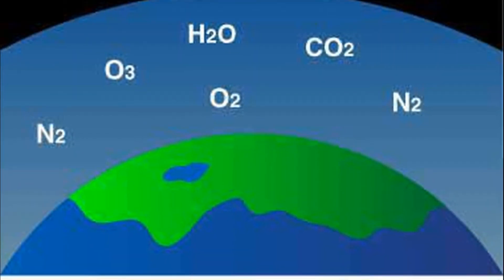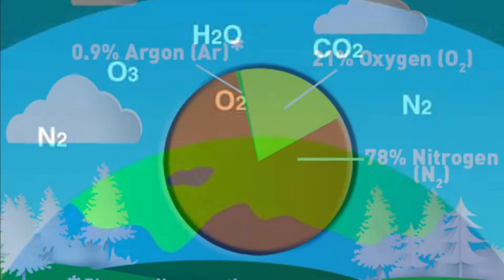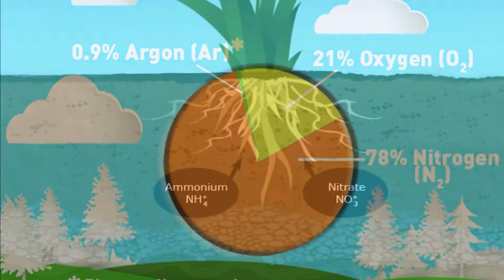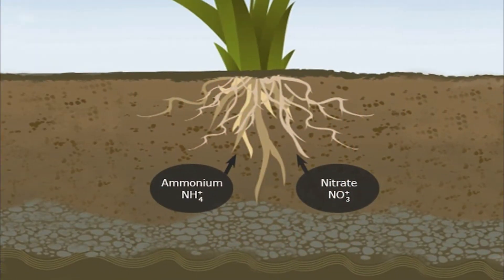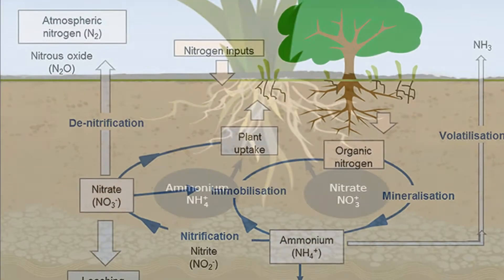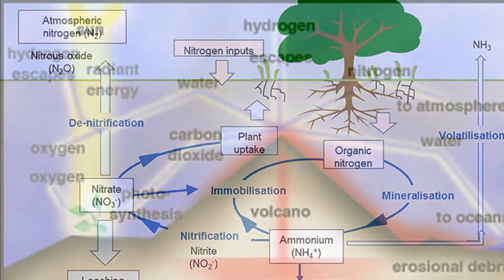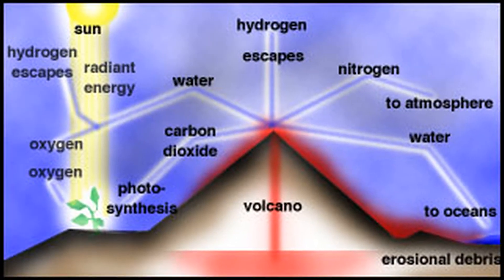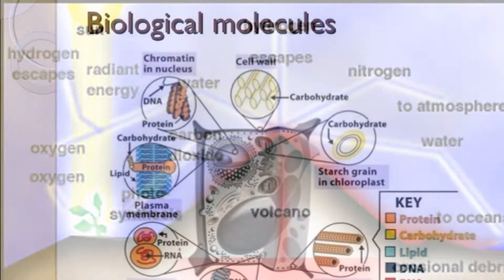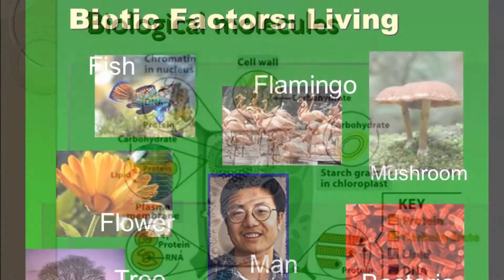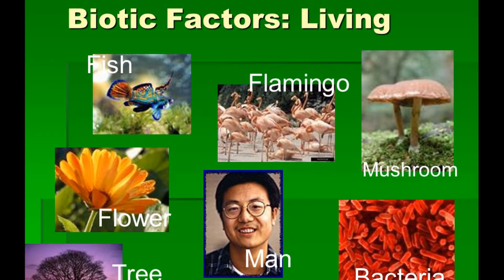It is important that the percentage composition of the various components of the atmosphere should remain constant. For example, the nitrogen that is being used up by plants for making proteins must return to the atmosphere in some way. If it does not happen, then the proportion of nitrogen in the air will go on decreasing. Eventually, there will be no nitrogen left in the air and living organisms will not be able to survive.